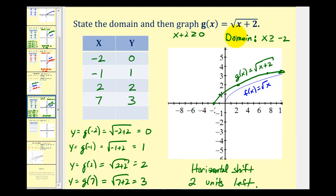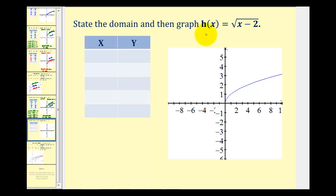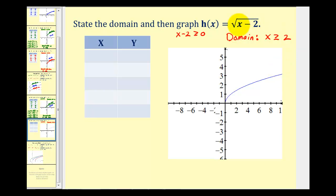Notice how this might be the opposite direction you were expecting, because it says x plus two. But if we have x plus two underneath the square root, the shift is actually left two units. For h of x equals the square root of x minus two, this again affects the domain: x minus two must be greater than or equal to zero, so x is greater than or equal to two. We start our table at x equals two, then choose x values of three, six, and eleven to get perfect square radicands.